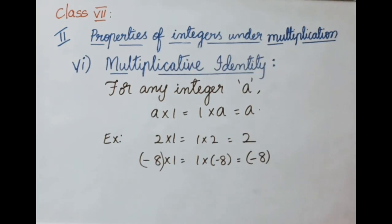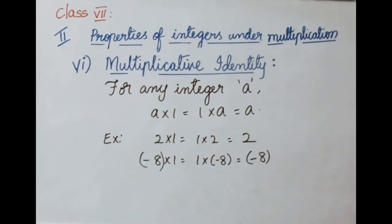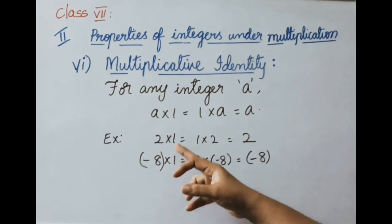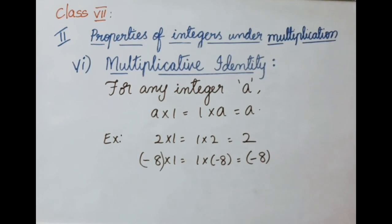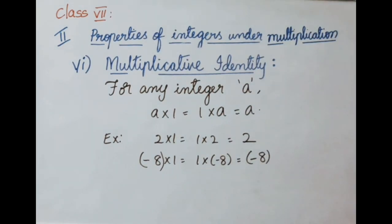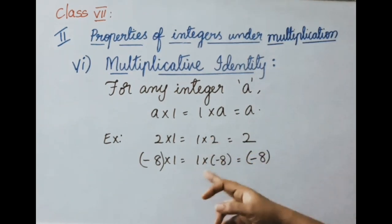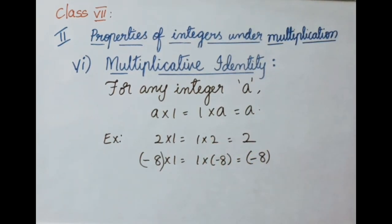Multiplicative identity: for any integer A, A into 1 equals 1 into A equals A. Multiplying any integer by 1 doesn't change the value, so 1 is called the multiplicative identity. Example: 2 into 1, or 1 into 2, equals 2. And minus 8 into 1, or 1 into minus 8, equals minus 8. Therefore 1 is the multiplicative identity.